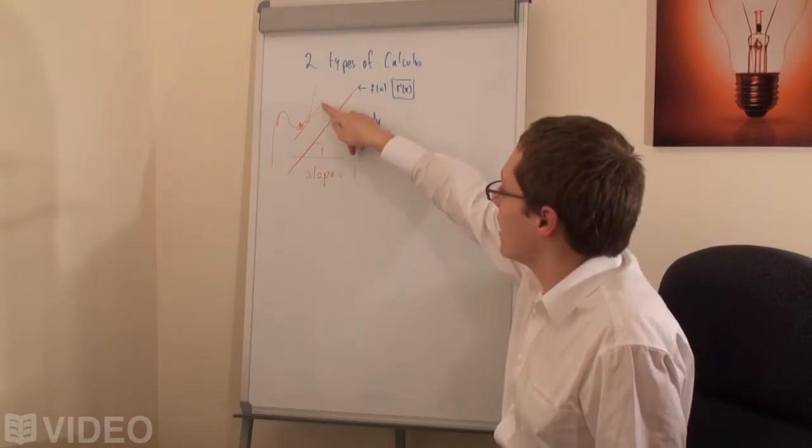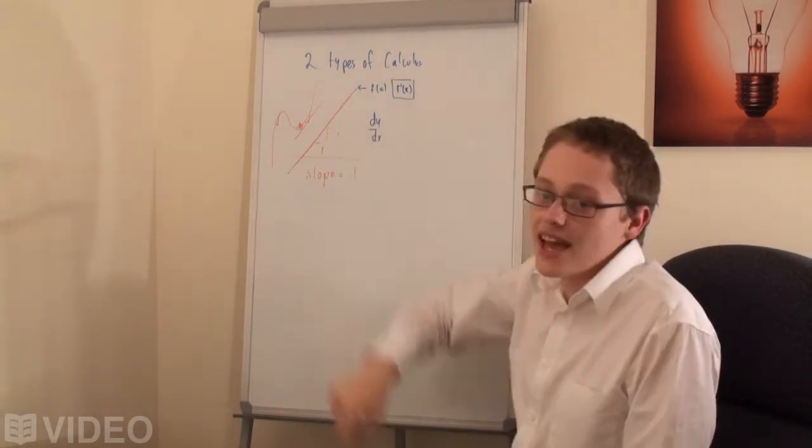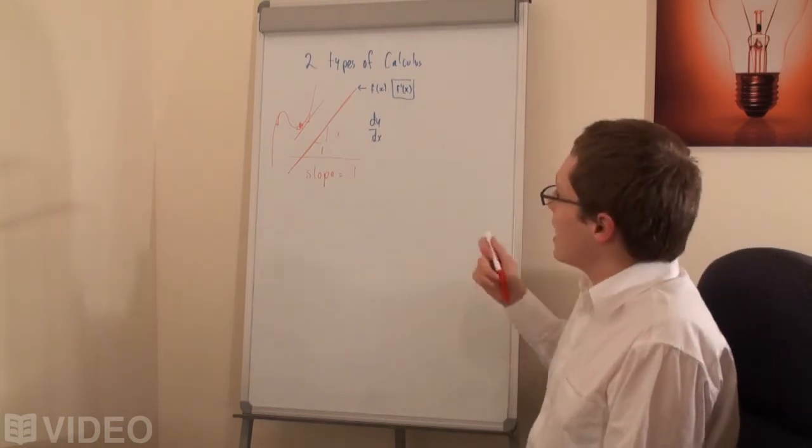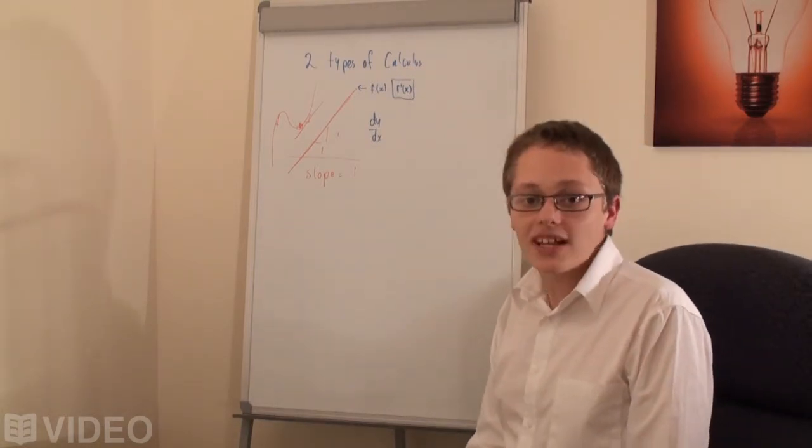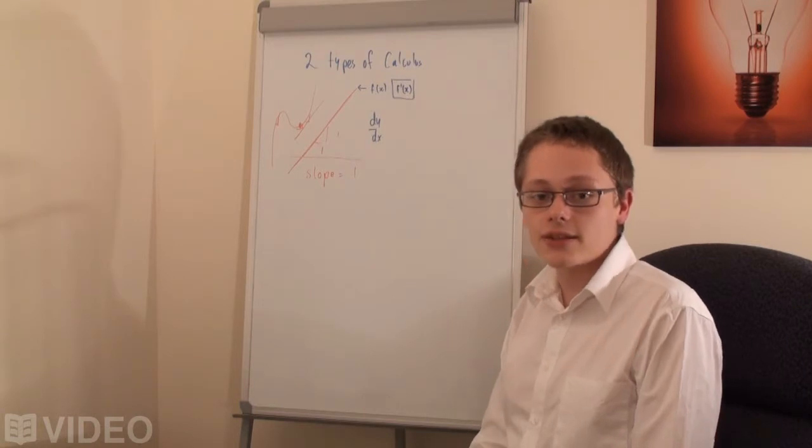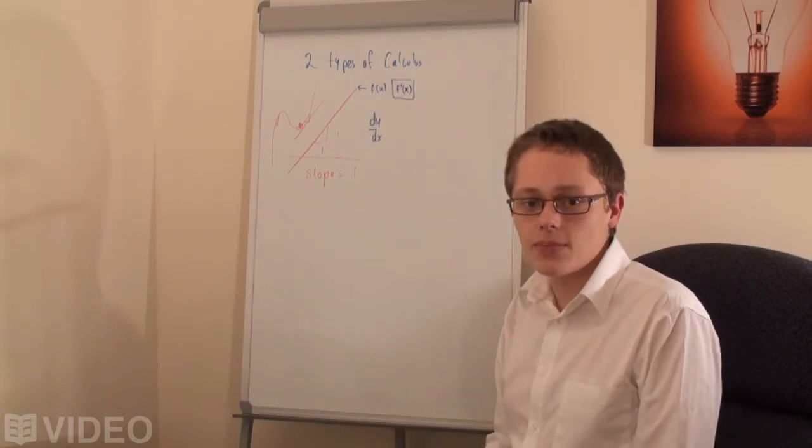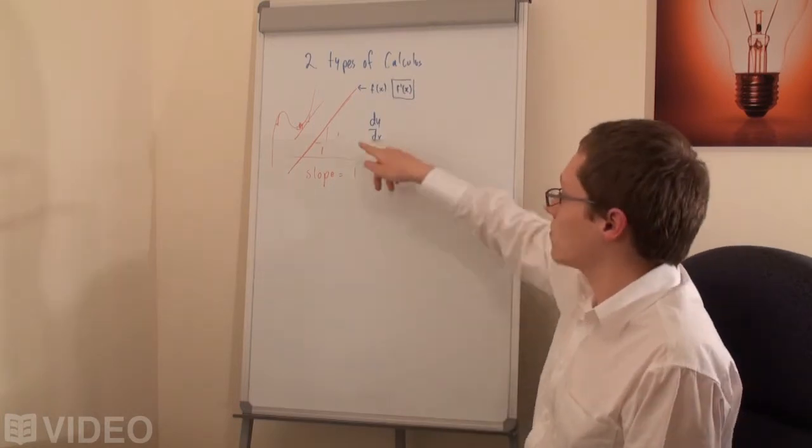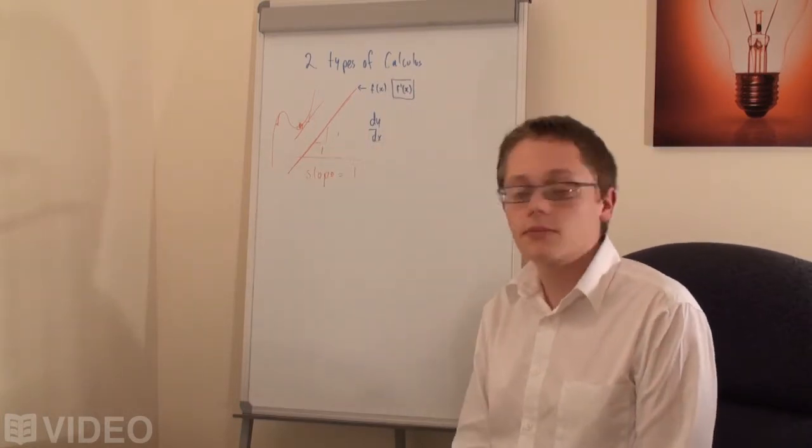What is the slope of this line when we're looking at it at, say, x equals 1 on that function? And you'll be learning how to differentiate in this series. And to differentiate is simply the verb of being able to work out what the slope function is.